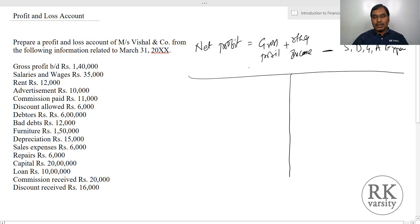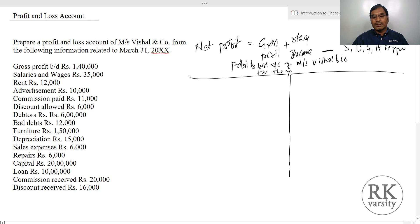We'll write here: Profit and Loss Account of Messrs Vishal and Co, for the year ended March 31st, 2021. Here we have a debit side and a credit side.